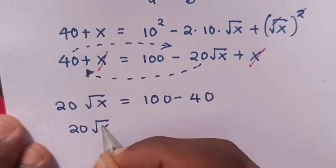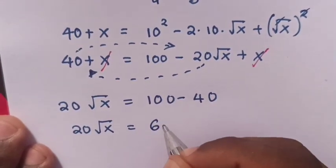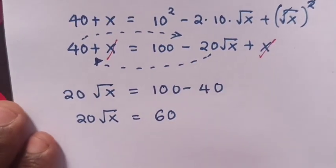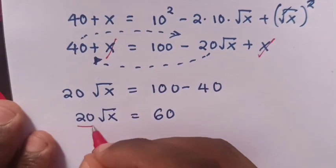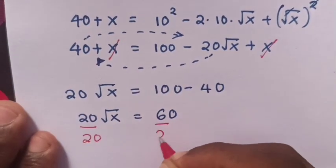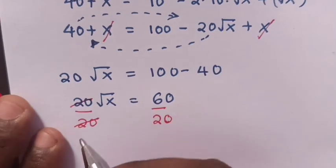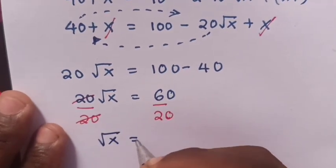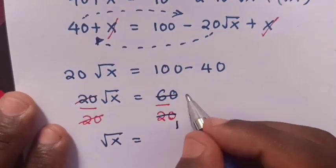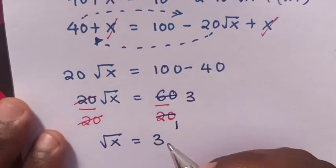20 square root of x equals 60. We divide both sides by 20. 20 and 20 will cancel, so square root of x equals 60 divided by 20, which equals 3.